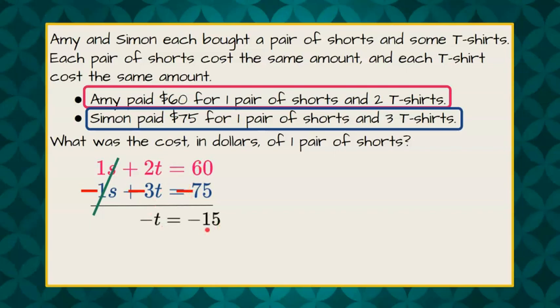I'm going to multiply both sides by negative 1 to find out that t is equal to positive 15. So I know that a t-shirt costs $15, but I'm asked to find the cost in dollars of one pair of shorts.